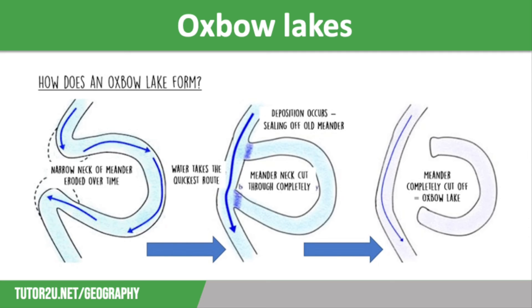Because the loop of the old channel is no longer receiving water, it will start to become cut off, and as flooding deposits more material onto the new river banks, this makes the old loop become even more detached. The old channel becomes an oxbow lake when deposition seals its two ends to separate it from the river and only the far end of the meander will remain. Eventually it gets filled in with debris and soil, and it might even have trees in it.